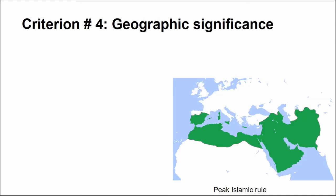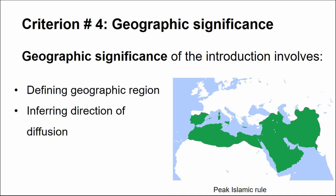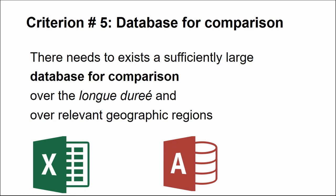Criteria number four: geographic significance. This involves defining the geographic region broadly enough so that it has meaning. In my case the Levant is a broad enough geographical region, but it's also important to take into account neighboring regions and to infer the direction of diffusion. If we're talking about an east-west diffusion and we find an earlier example of the crop westward of the Levant, that would rule out the possibility of a new introduction in the Levant at that time.